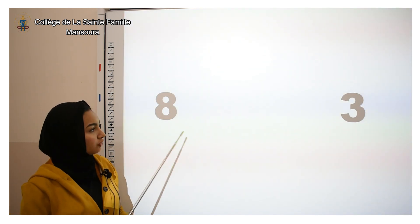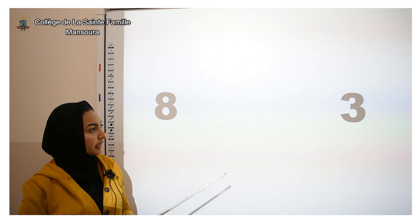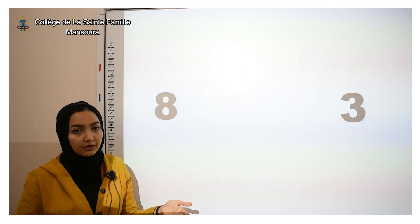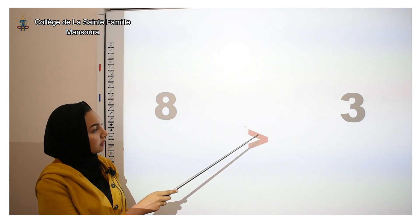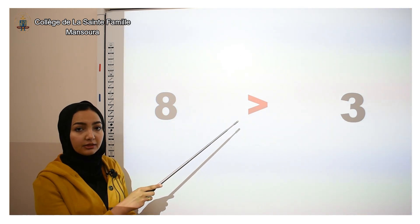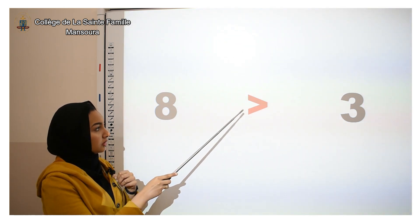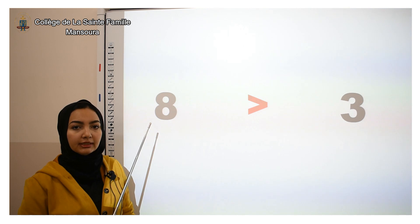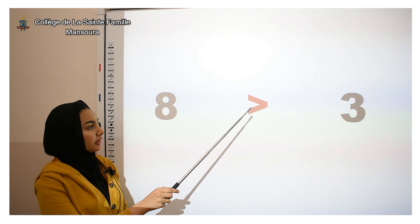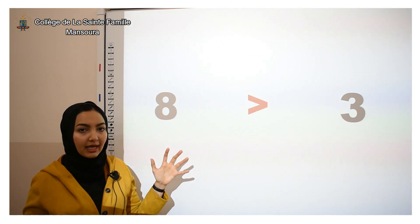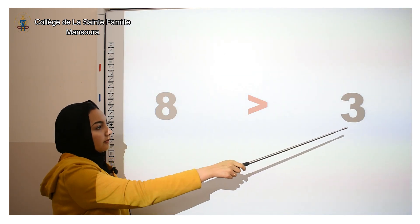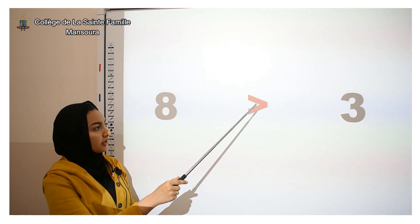Imagine you have a group of eight fish and a group of three fish, and Mr. Alligator is hungry. He would like to eat the group of eight fish — yes, because he wants more. Imagine this is Mr. Alligator's mouth; he will open his mouth towards the group that has more. We read this like: eight is greater than three. Greater than means this number has more.